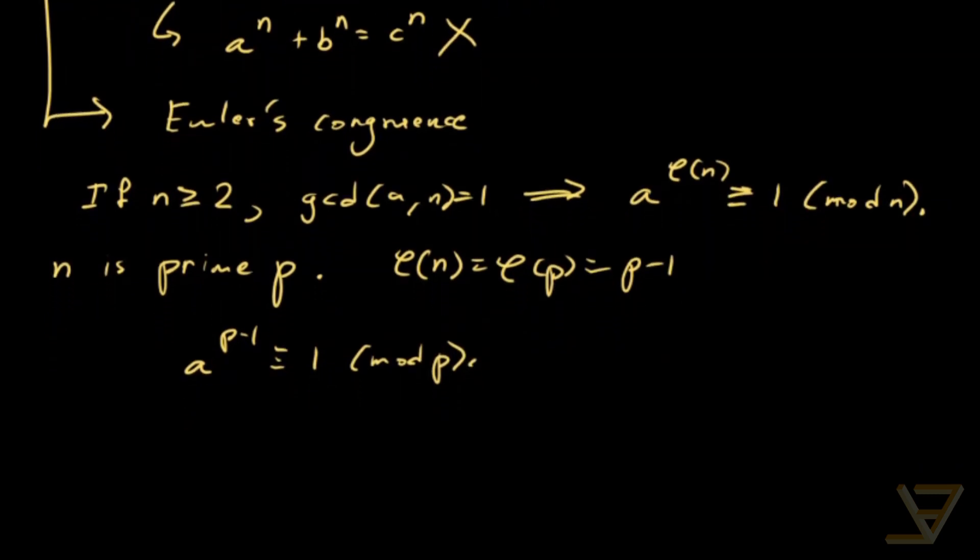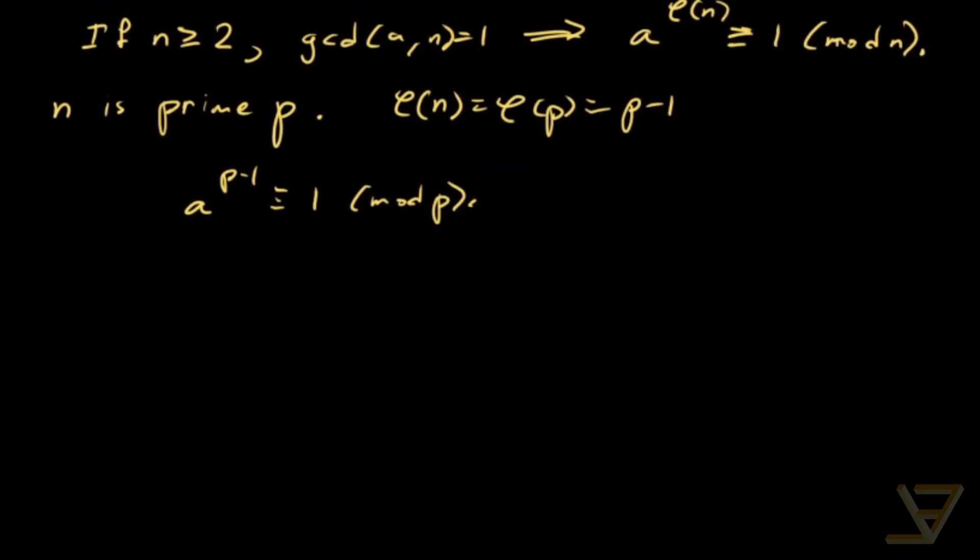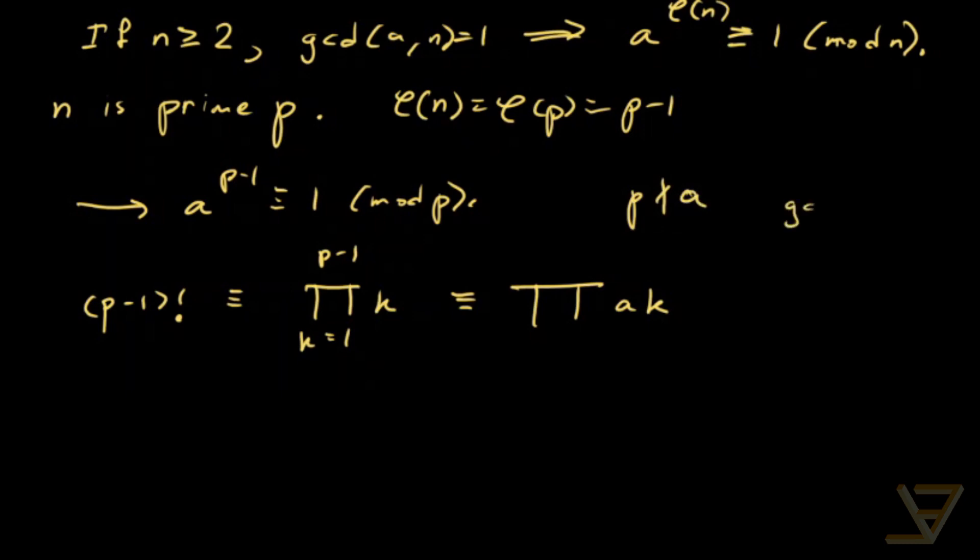But I just want to show you what the proof looks like when we specialize it to this case. What we get is that p minus 1 factorial is congruent to the product of the k's, where k is from 1 to p minus 1. And if you know the proof of Euler's congruence, what you can do is you can multiply through all these multiplicands by a, where a is anything such that p does not divide a, which is equivalent to gcd of a and p is equal to 1 since p is prime.